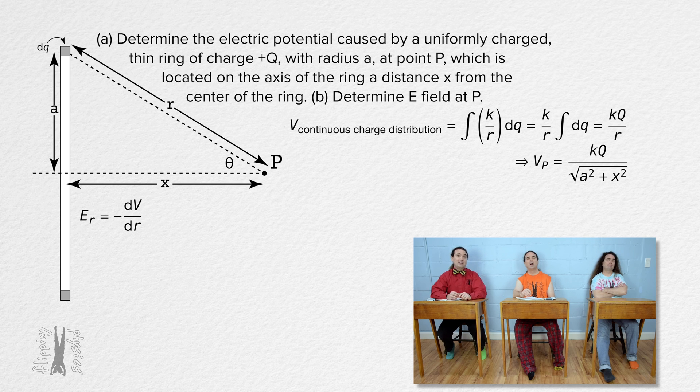We can substitute in the electric potential at point p Bobby just derived, and change it to the x direction because we know the electric field at point p is in the positive x direction. We showed that last time.